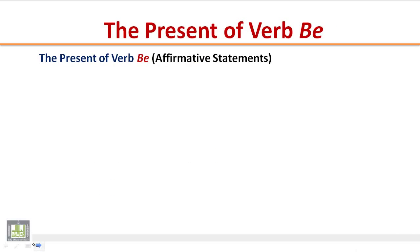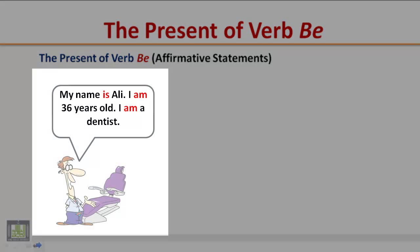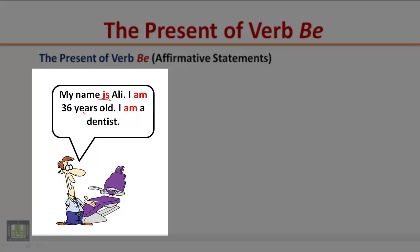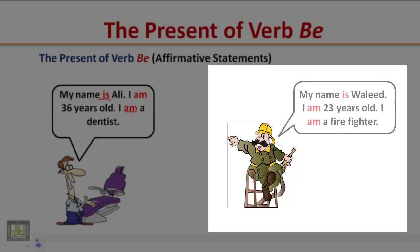The present of verb be: affirmative statements. Listen to the following short conversation and pay attention to the form of verb be. My name is Ali. I am 36 years old. I am a dentist. My name is Waleed. I am 23 years old. I am a firefighter.